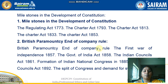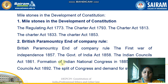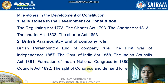The next milestone covers British Paramountcy and the end of company rule. This includes the First War of Independence in 1857, the Government of India Act 1858, the Indian Councils Act 1861, the formation of the Indian National Congress in 1885, the Indian Councils Act 1892, and the split of Congress and demand for Swaraj.